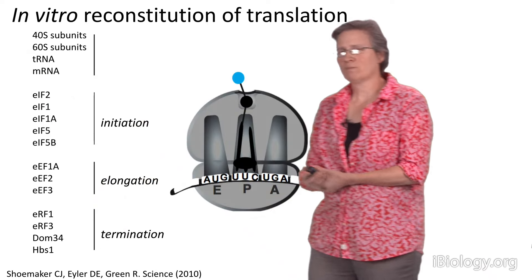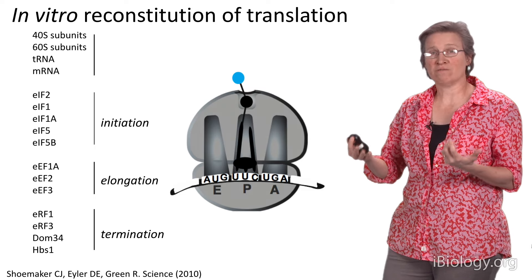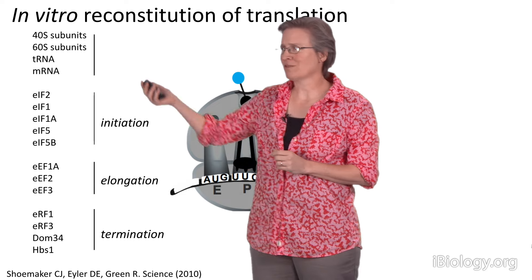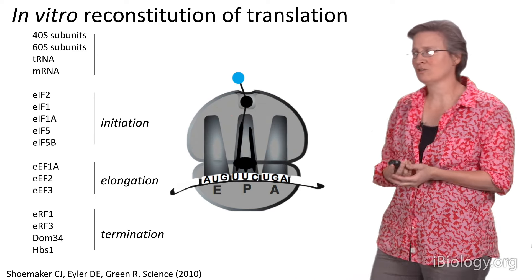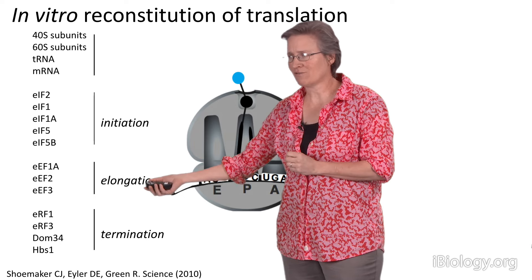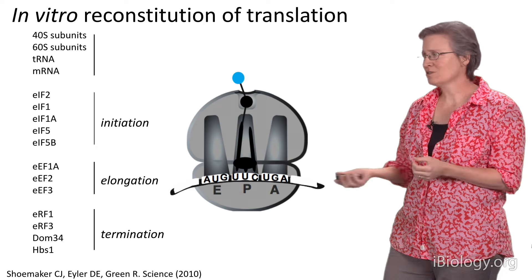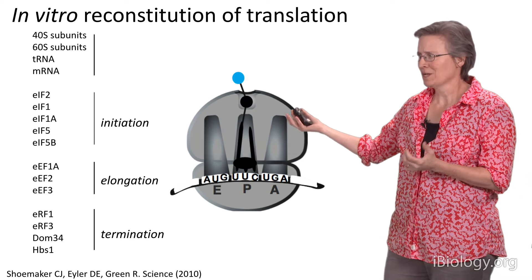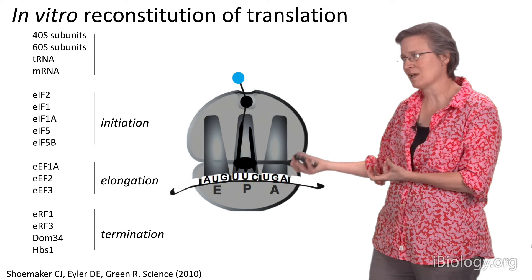With these ideas in mind, we incorporated DOM34 and HBS1 into an in vitro reconstituted translation system from yeast Saccharomyces cerevisiae. In our lab we had purified ribosomal subunits, tRNAs, messenger RNAs, five key initiation factors, elongation factors, termination factors, and we added DOM34 and HBS1. Such a reconstituted system allows us to form ribosome complexes with various messenger RNAs, place a stop codon or sense codon into the aminoacyl site, and follow the activity of these complexes.